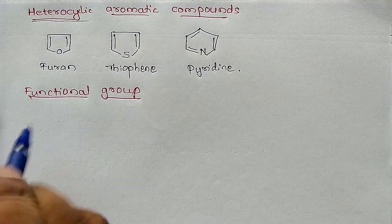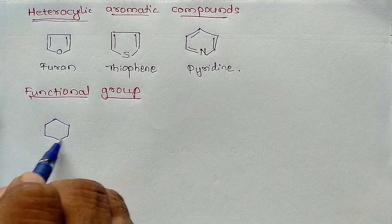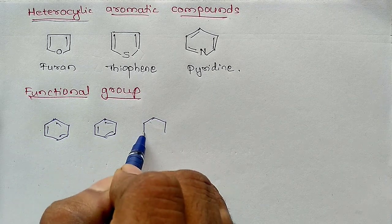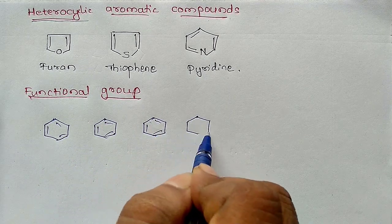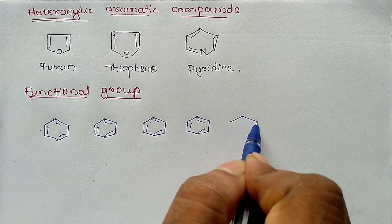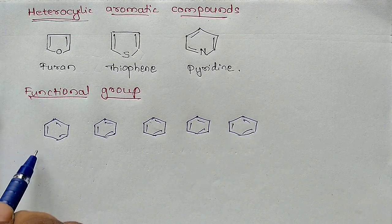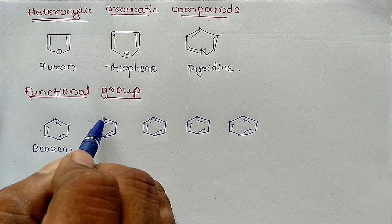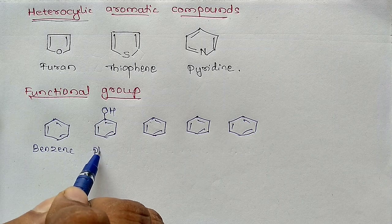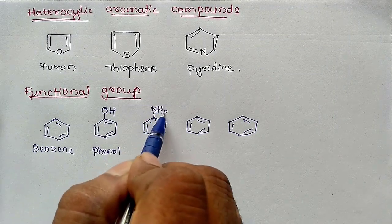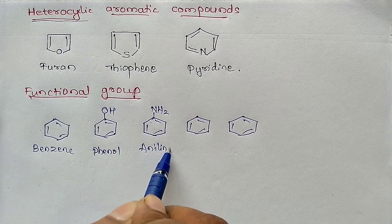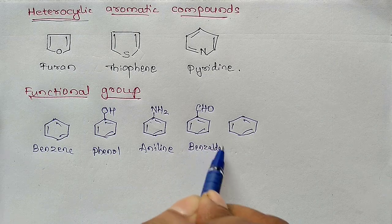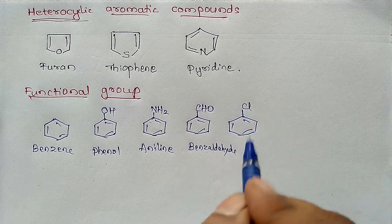Consider a benzene ring. I will write four to five benzene rings here. In the first, only carbon atoms are present with hydrogen — this is benzene. Then I replace one hydrogen with OH — this is phenol. Here I replace one hydrogen with NH2 — this is aniline. Here I replace one hydrogen with CHO — this is benzaldehyde. And here I replace one hydrogen with Cl — this is chlorobenzene.